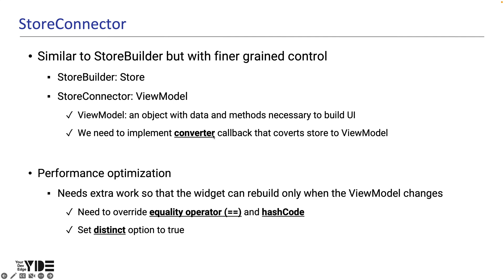In StoreConnector, the converter callback converts the store to a view model before the builder callback is executed. The StoreConnector then passes the view model to the builder callback instead of the store. So StoreBuilder passes the entire store to the builder, but StoreConnector creates only the data and methods needed by the widget as a view model and passes it to the builder.